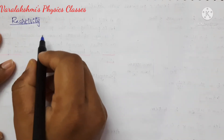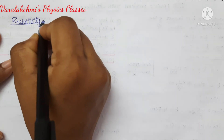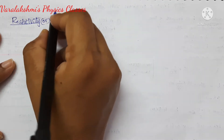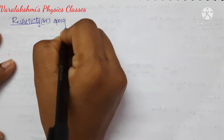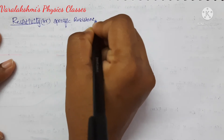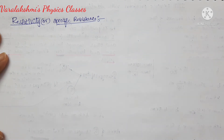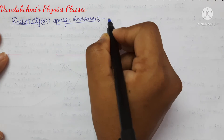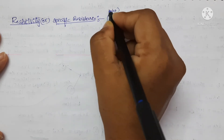In this video, I am going to explain the dimensions of resistivity. Resistivity is also called as specific resistance, and it is denoted with the symbol rho — spelled R-H-O, rho.